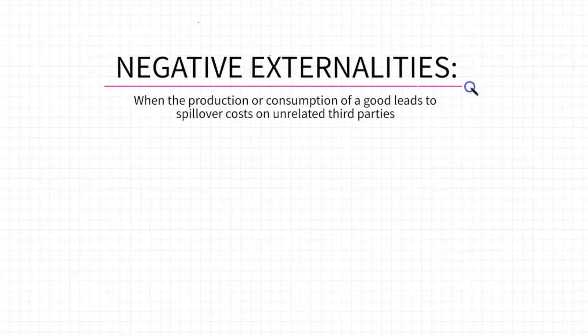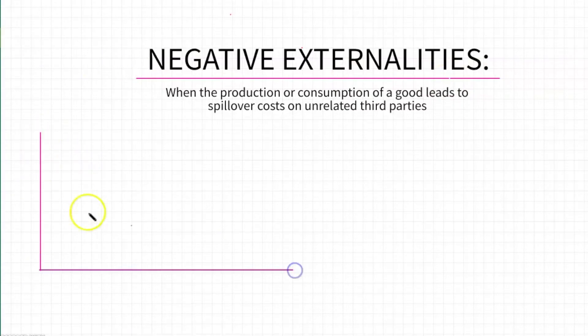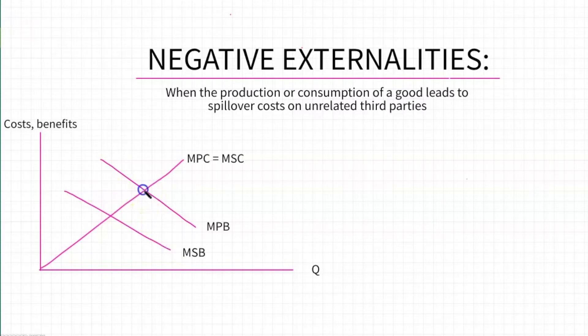In the case of negative externalities, we have a situation where the production or consumption of a good leads to spillover costs to unrelated third parties. You can have a negative externality of consumption or of production. In this case, what I'm drawing here is a negative consumption externality, and that happens because the marginal private benefits have been greater than the marginal social benefits.